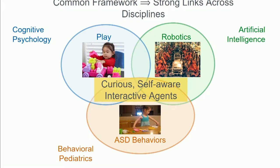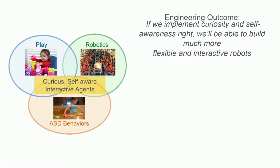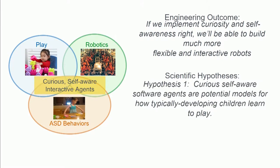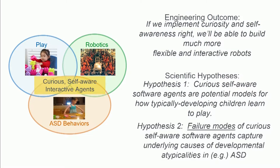If this framework is correct, we expect a few outcomes. The first is an engineering outcome: if we can implement curious self-aware interactive agents in robots, we can have flexible, social, interactive robots that can collaborate with us in everyday life. We also have two scientific hypotheses. First, a curious self-aware software agent can serve as a computational model for how typical children develop through play. Second, the failure modes we encounter when implementing these agents — such as imbalances between exploration and social attention — might give us insight into the atypicalities we see in ASD children.